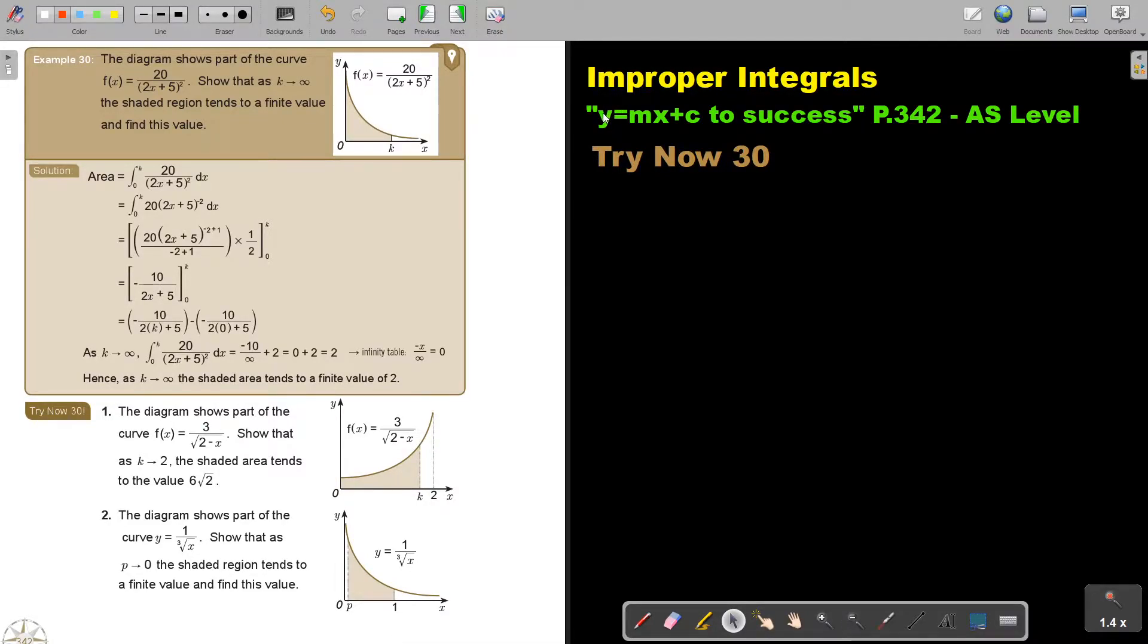This is the final video on improper integrals. You will find this on page 342 in the Namibia AS Level Mathematics textbook Y equals MX plus C to success. Let's look at the final example.